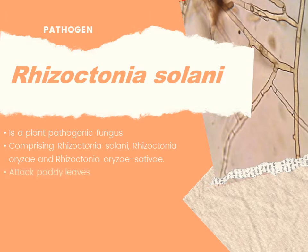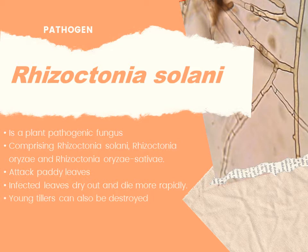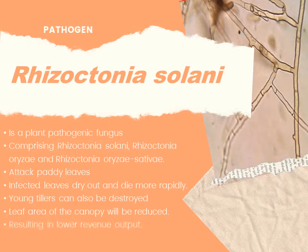The disease attacks paddy leaves — infected leaves dry out and die more rapidly. Young tillers can also be destroyed. As a result, the leaf area of the canopy can be significantly reduced. This reduction in leaf area, along with disease-induced senescence of leaves and young infected tillers, are the primary causes of yield reduction.